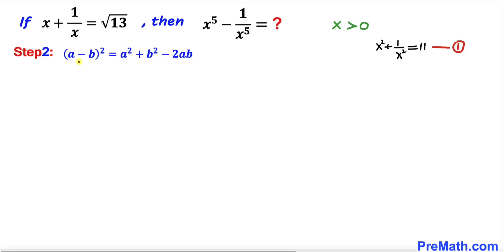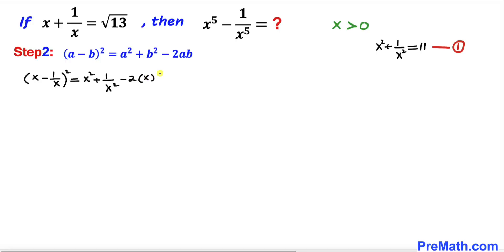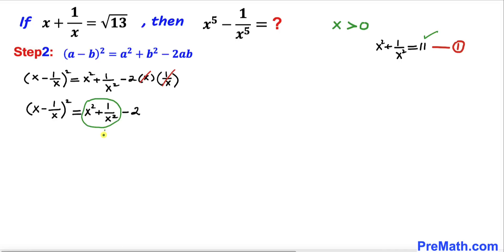Here's our next step. Let's recall the identity (a - b)² = a² + b² - 2ab. Suppose a is x and b is 1 over x. Then this equation can be written as (x - 1/x)² equal to x² plus 1 divided by x² minus 2 times x times 1 divided by x. The x and 1 over x cancel, simplifying that term to negative 2. We know that x² + 1/x² equals 11 from equation 1, so we replace it by 11.